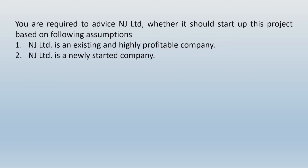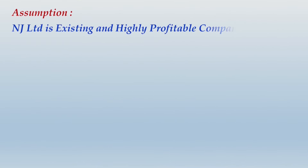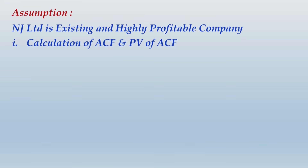You are required to advise NJ Limited whether it should start up this project based on the following assumptions: number one — NJ Limited is an existing and highly profitable company; and assumption number two — NJ Limited is a newly started company. The manner in which we have discussed the concept of tax implications in capital budgeting is exactly the kind of scenario now coming up. Let us deal with the first assumption — NJ Limited is an existing and highly profitable company. Write up the first heading: 'Calculation of Annual Cash Flows and PV of Annual Cash Flows'.